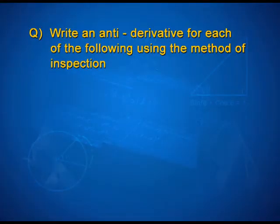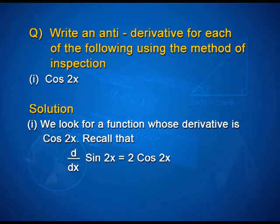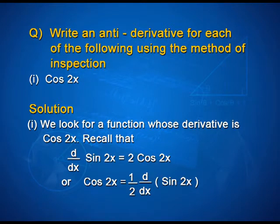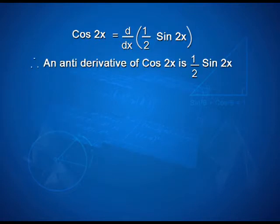Write an antiderivative for each of the following using the method of inspection. First, cos 2x. For cos 2x, we look for the function whose derivative is cos 2x. Recall that d/dx of sin 2x is equal to 2 cos 2x, or cos 2x is equal to 1/2 · d/dx of sin 2x, that is equal to d/dx of (1/2 · sin 2x). Therefore, an antiderivative of cos 2x is (1/2) sin 2x.